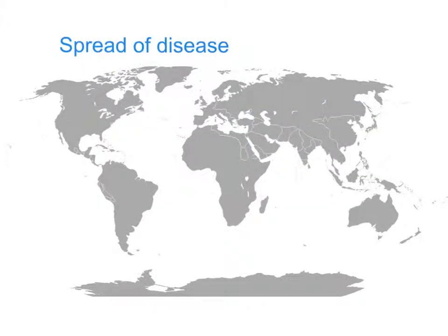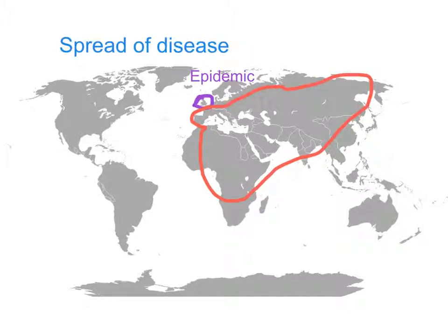Diseases can spread far and wide, and there are two words you need to understand. A disease which only affects one single country or relatively small area is called an epidemic. But if the disease gets major and starts to spread across more than one country — possibly across huge areas of the world — then that becomes known as a pandemic. An epidemic is found in one country only; a pandemic is crossing many countries, and maybe crossing the whole wide world.